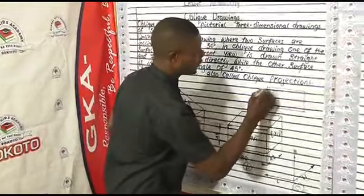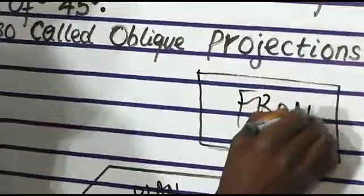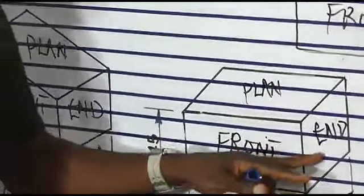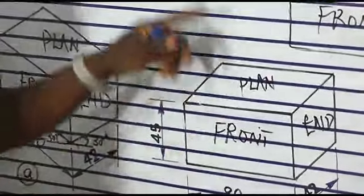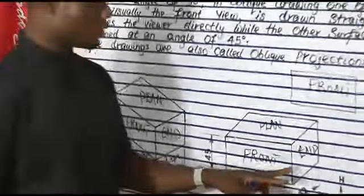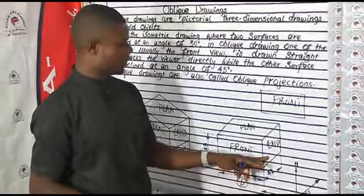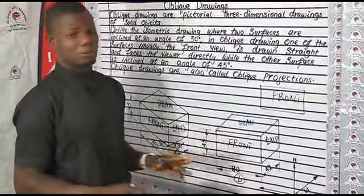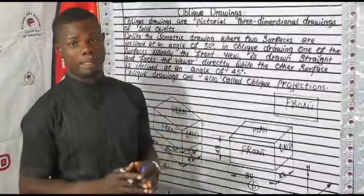In oblique drawing, the front view is just like a plane shape — a rectangle. That's the front view as you can see here. The front is facing us directly, while you have the end elevation which is inclined at an angle of 45 degrees. We always make use of 45-degree oblique projection. And we have our plan, which is just the top of the object.